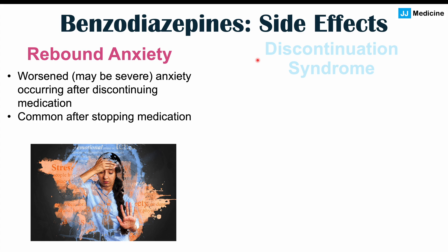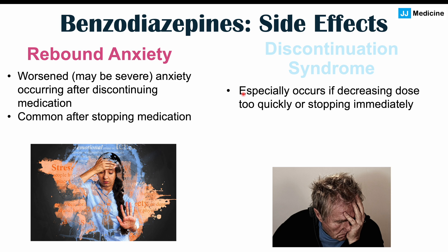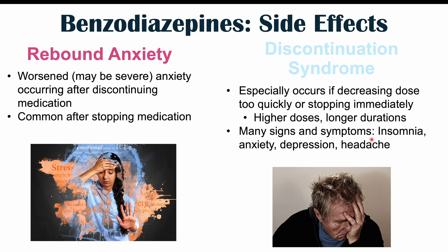Stopping benzodiazepines too quickly can also lead to a discontinuation or withdrawal syndrome, especially with higher doses and longer durations of use. Abrupt cessation can cause severe symptoms including insomnia, anxiety, depression, headaches, blurred vision, and confusion. It is therefore very important to taper the dose slowly, particularly for patients who have been taking high doses for long periods of time.